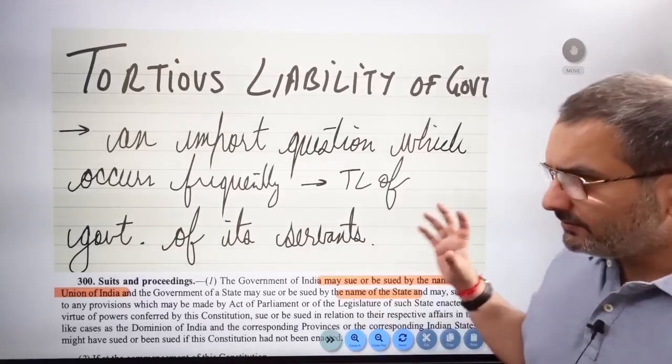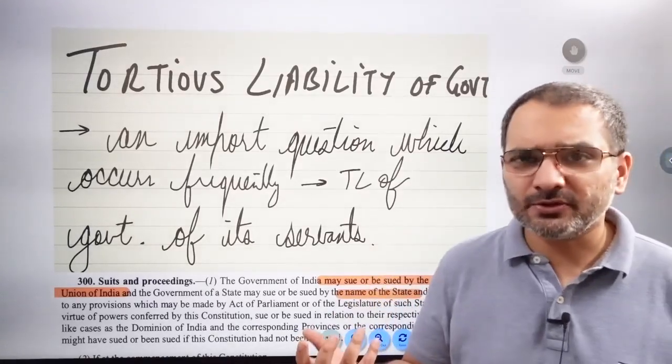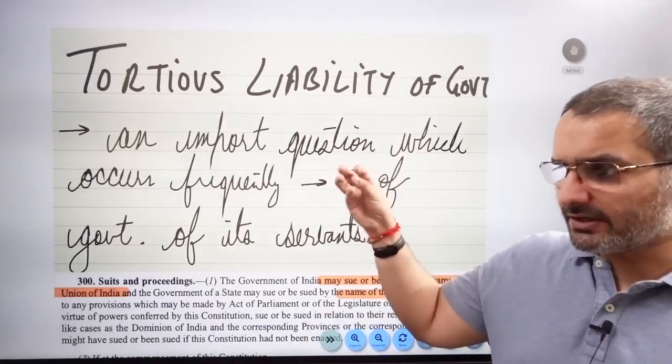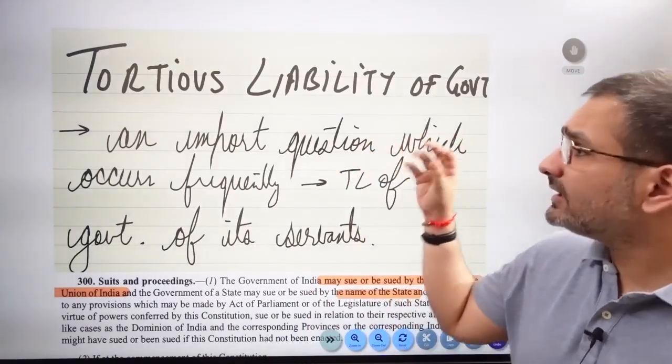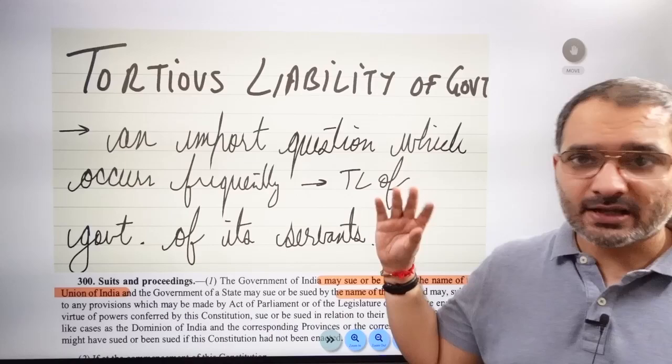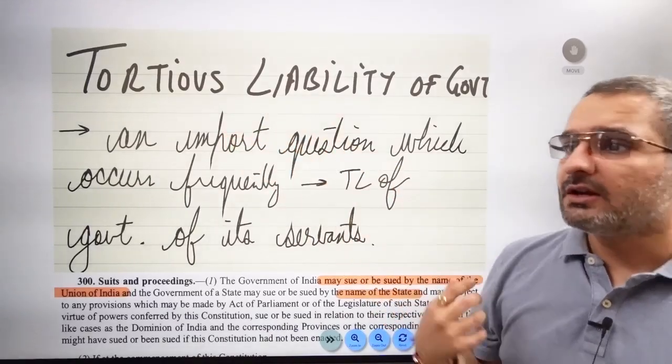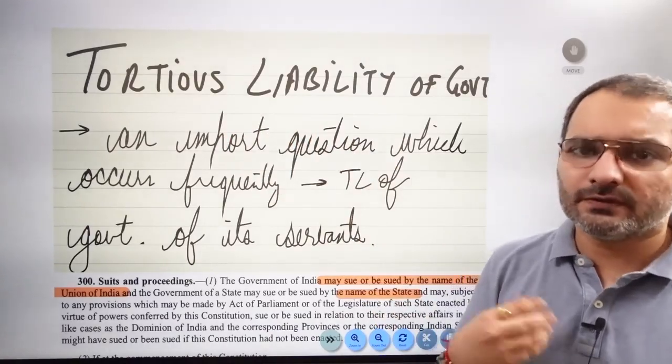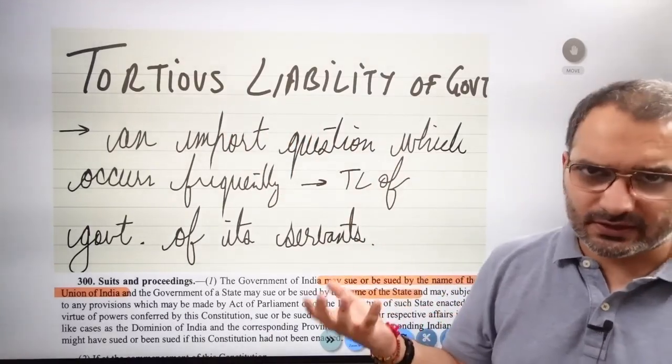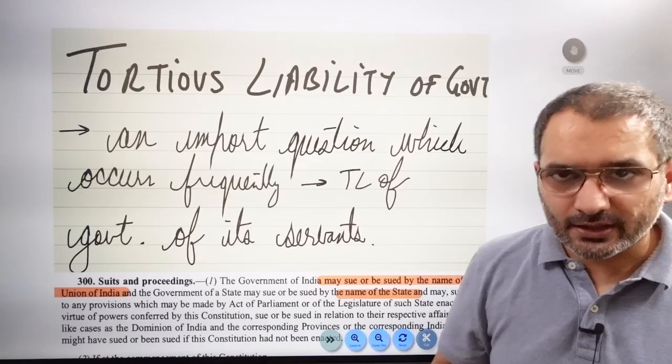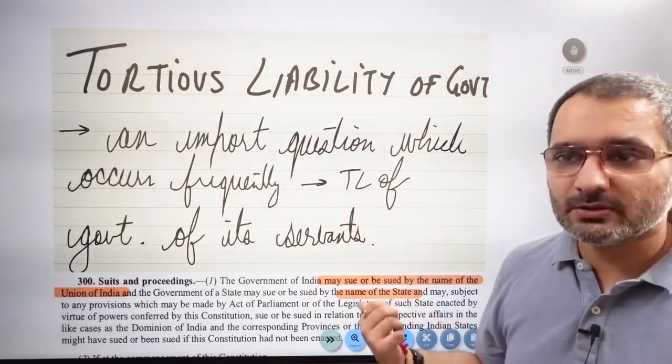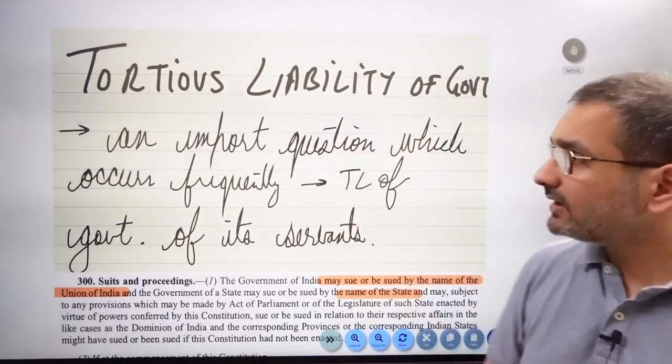Namaste. So now let's cover a very important question that usually pops up: comment on the tortious liability of the government, trace out the history of the law on tortious liability of the government, elucidate on the doctrine of sovereign immunity, etc. So what are you going to answer and what all case laws do you have to mention under this topic?